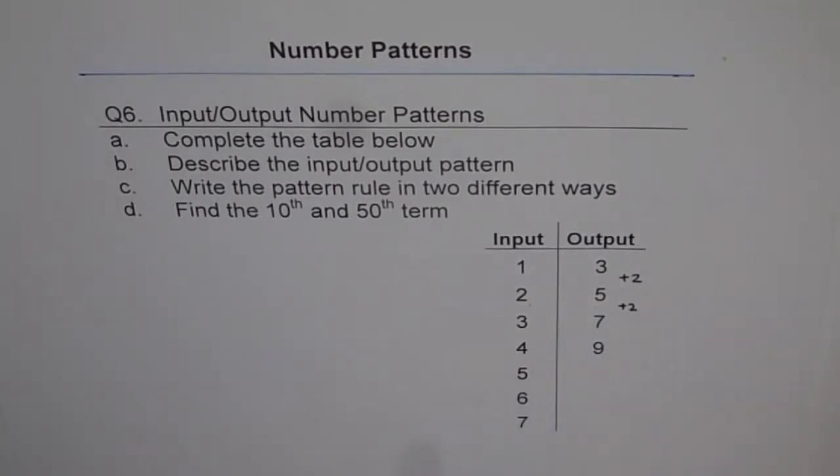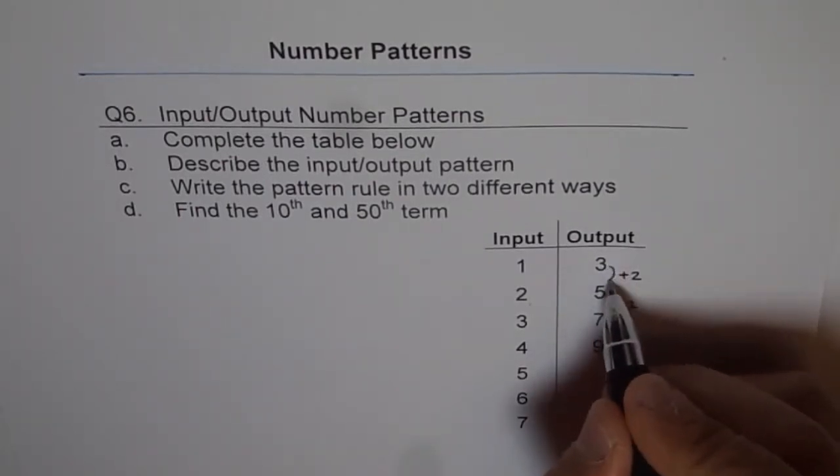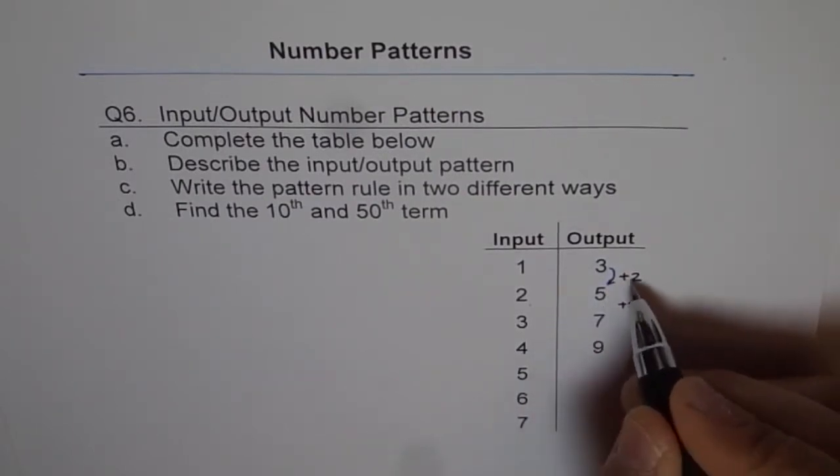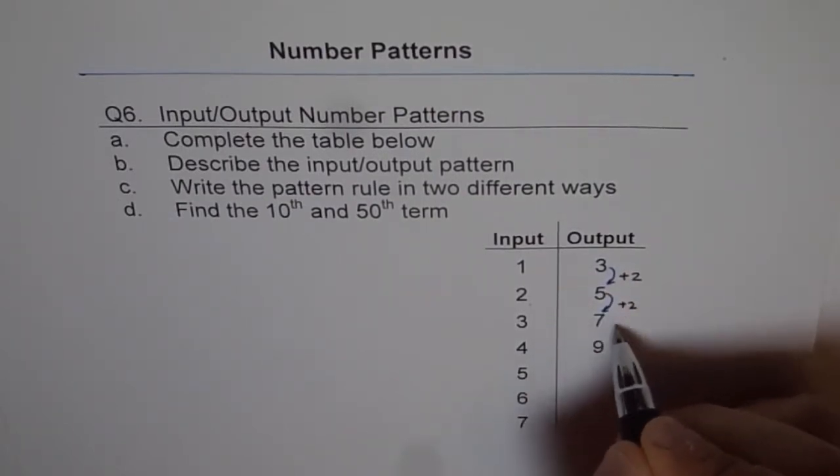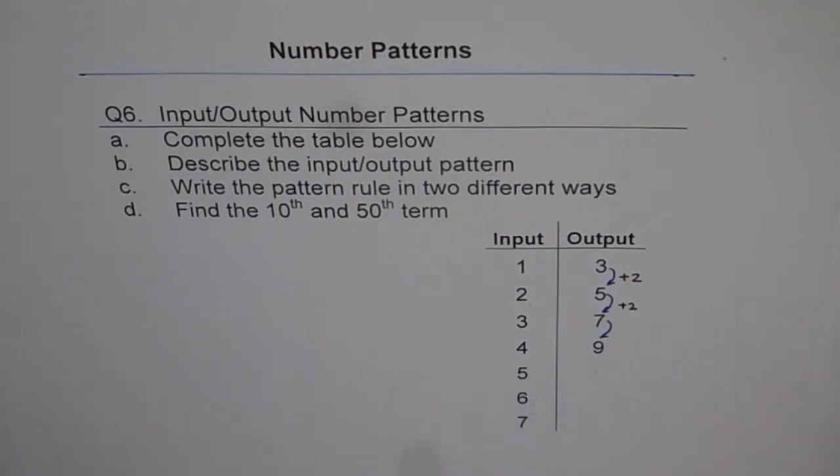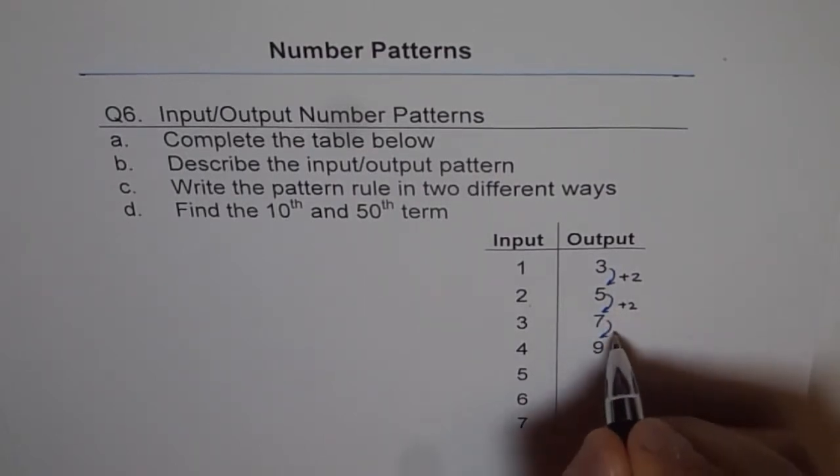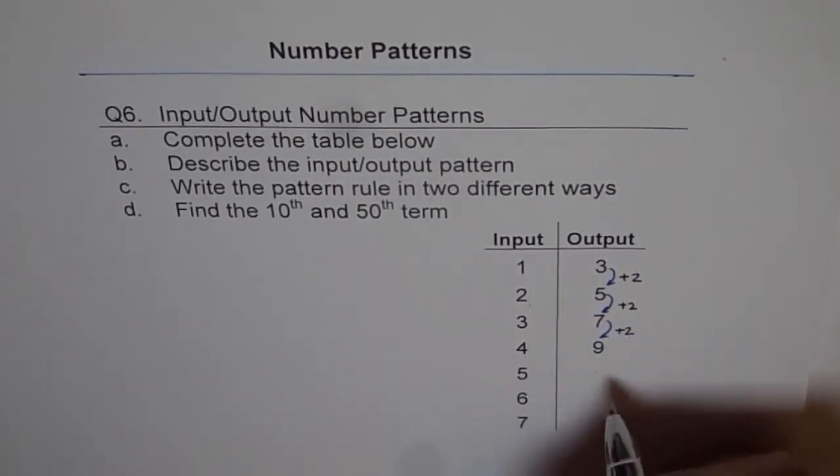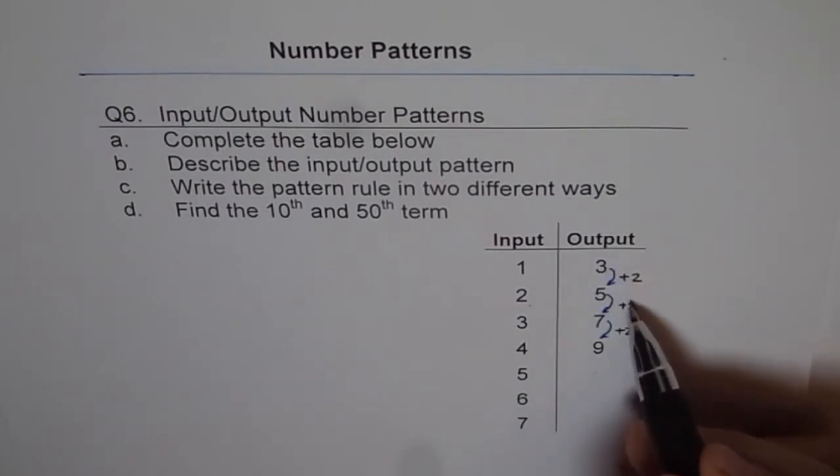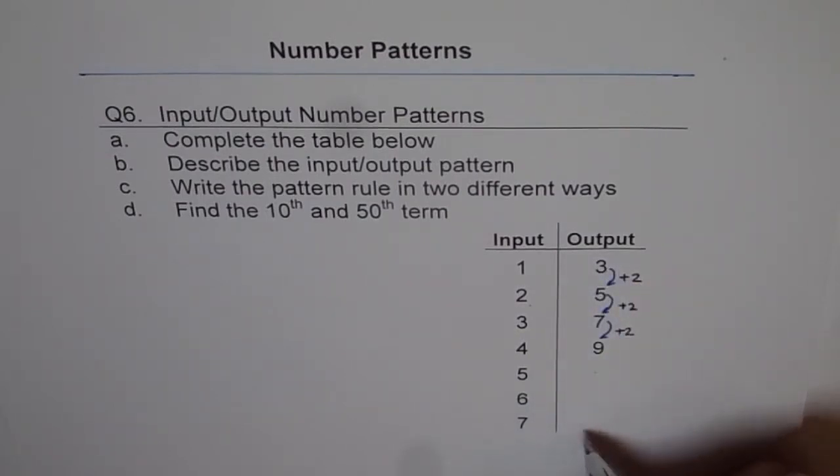Do you see that? So that means that getting the next term is possible by adding 2. Adding 2. That means plus 2 each time. You start at 3, add 2 each time, get the next term. That is how you can get outputs. So that is an easy pattern rule.